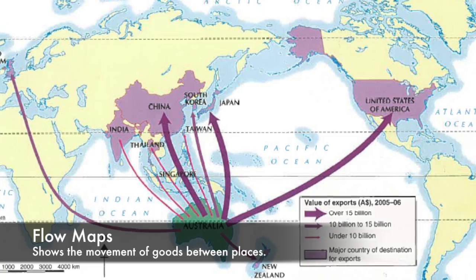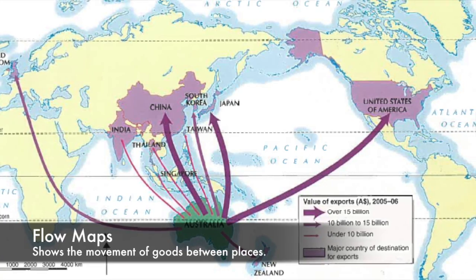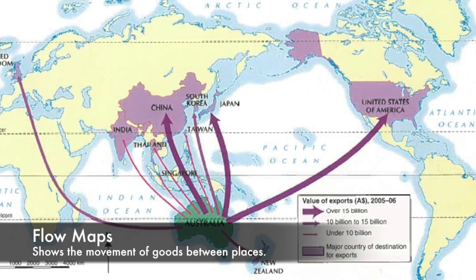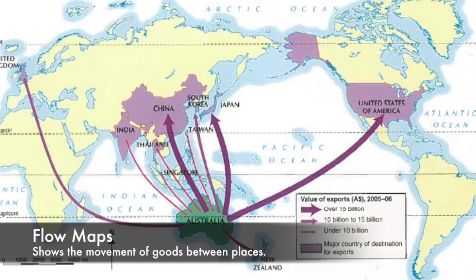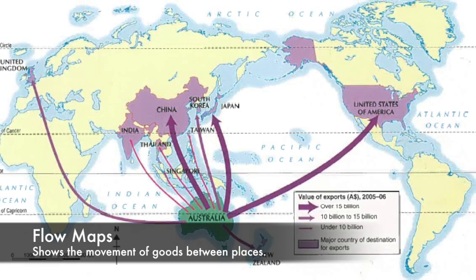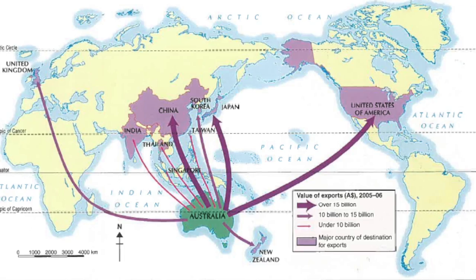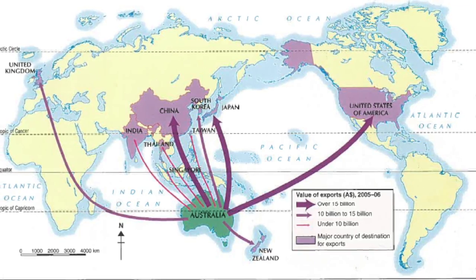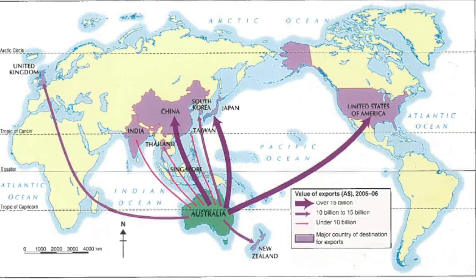Lastly, flow maps. These show the movement of goods between places. Lines varying in thickness are used to indicate different amounts, and arrows show the direction of movement.